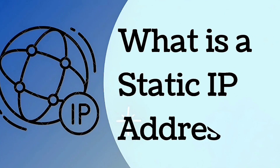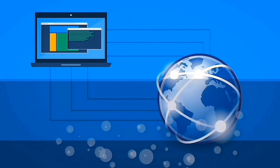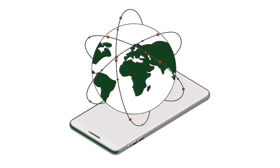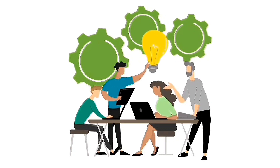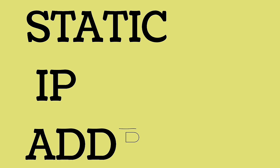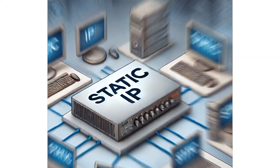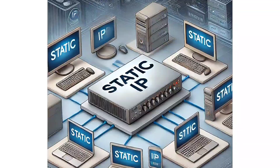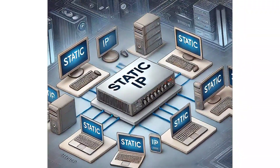What is a static IP address? A static IP address is an address that is permanent, meaning it remains the same every time. Static IP addresses are commonly used by corporations to reduce connection issues. They are particularly useful for heavy data consumers and for accurately accessing geolocation data. Using a static IP address can be costly, as it often comes with additional fees. Static IP addresses do not change automatically.